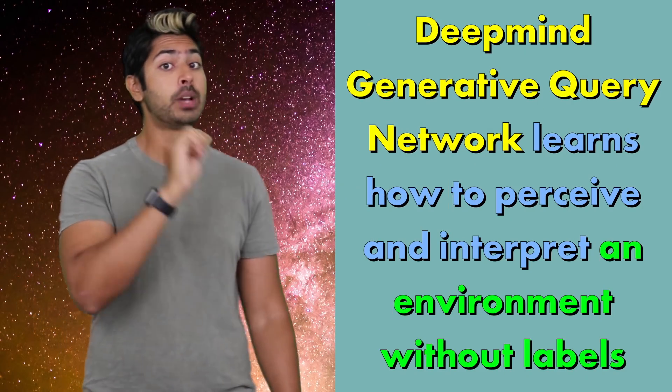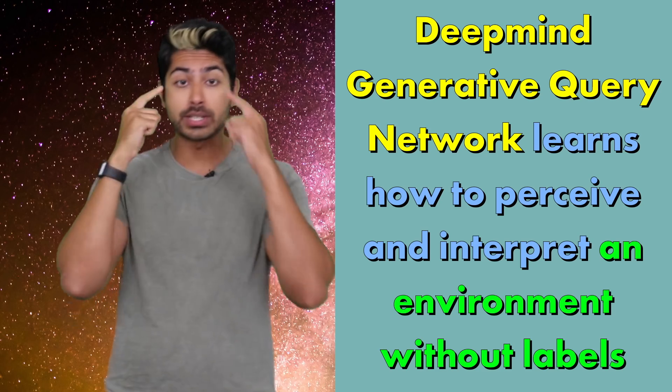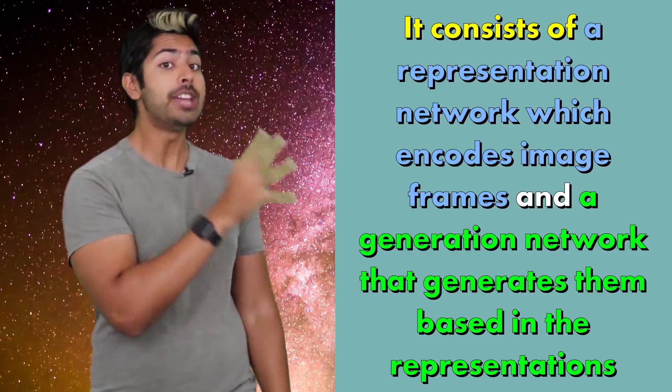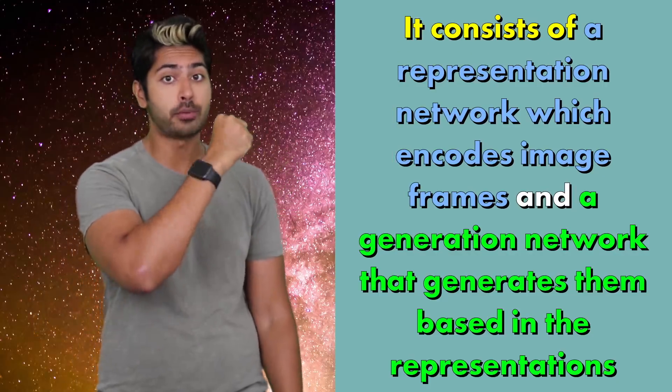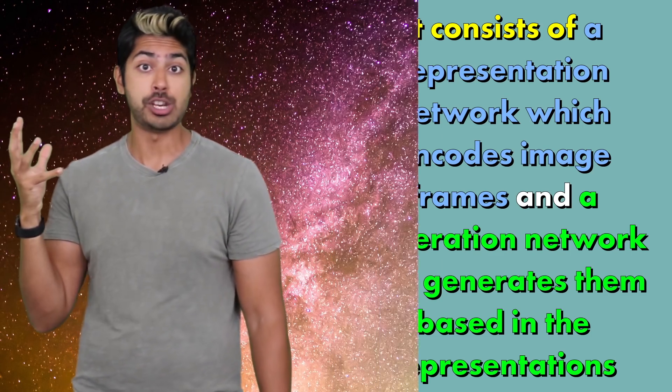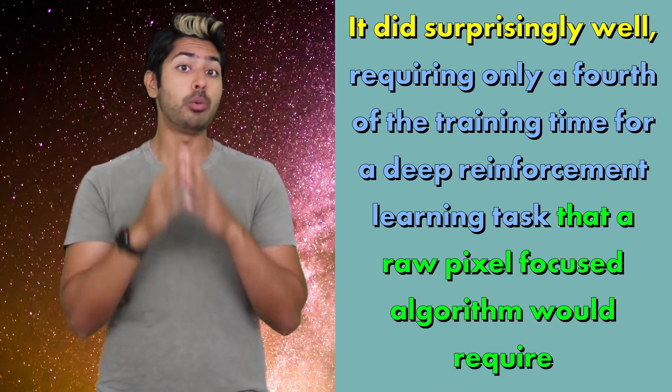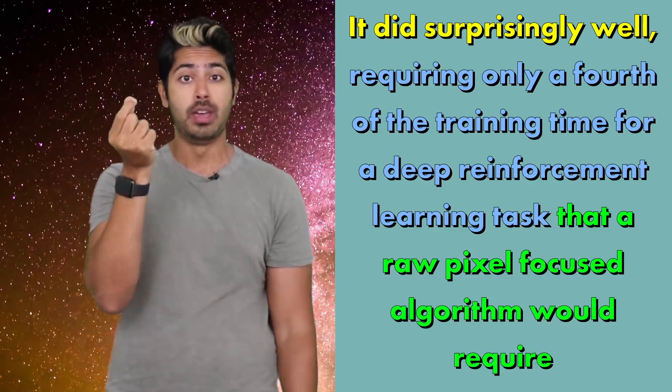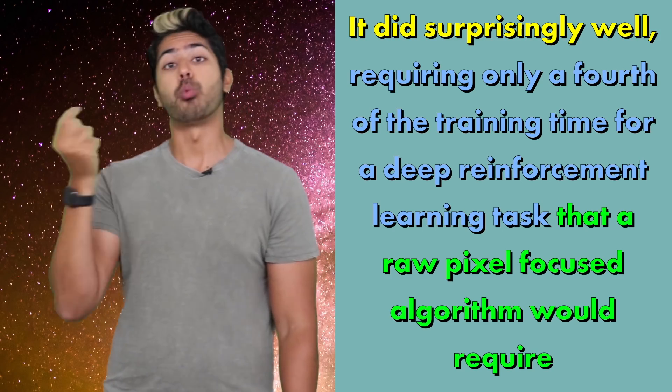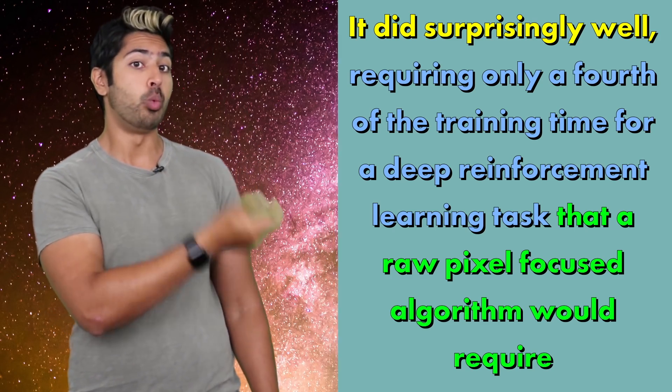Three things to remember from this video. DeepMind's Generative Query Network learned how to perceive and interpret an environment without labels. It consists of a representation network which encodes image frames and a generation network that generates them based on those representations. And it did surprisingly well, requiring only a fourth of the training time for a deep reinforcement learning task that a raw pixel focused algorithm would require.